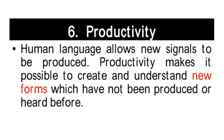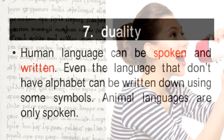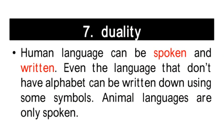The sixth property is productivity. Human language allows new signals to be produced; productivity makes it possible to create and understand new forms which have not been produced or heard before. The seventh property is duality. Human language can be spoken and written. Even languages that do not have an alphabet can be written down using some symbols. Animal languages are only spoken.